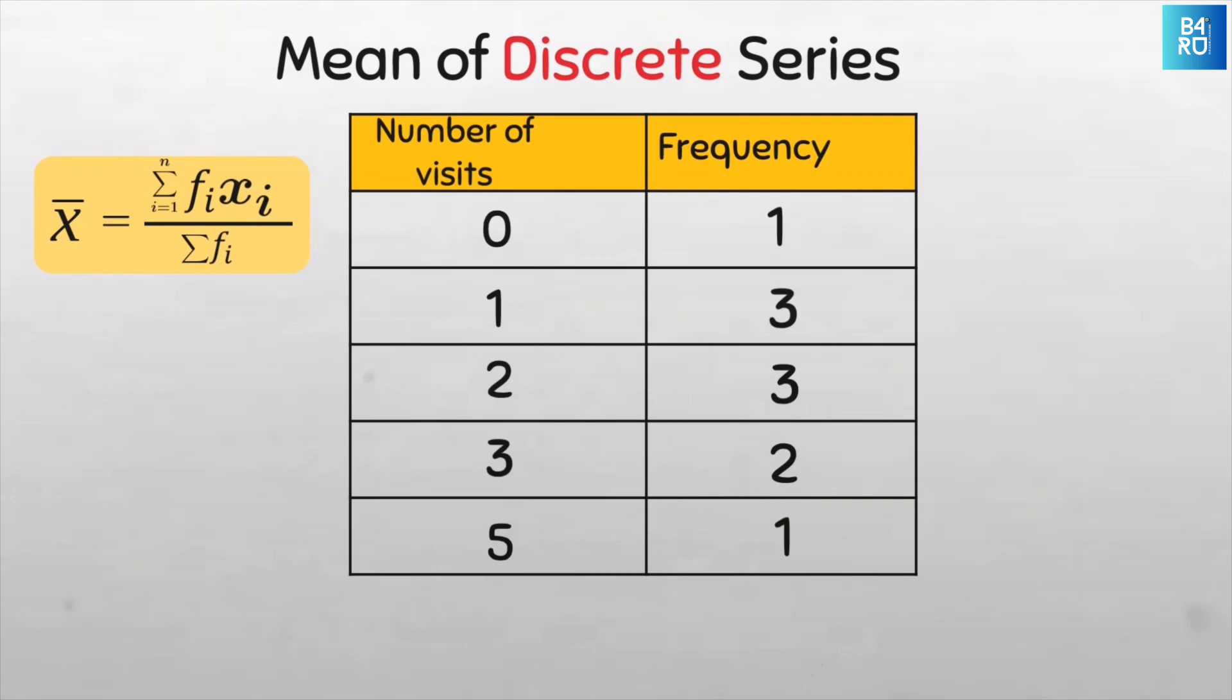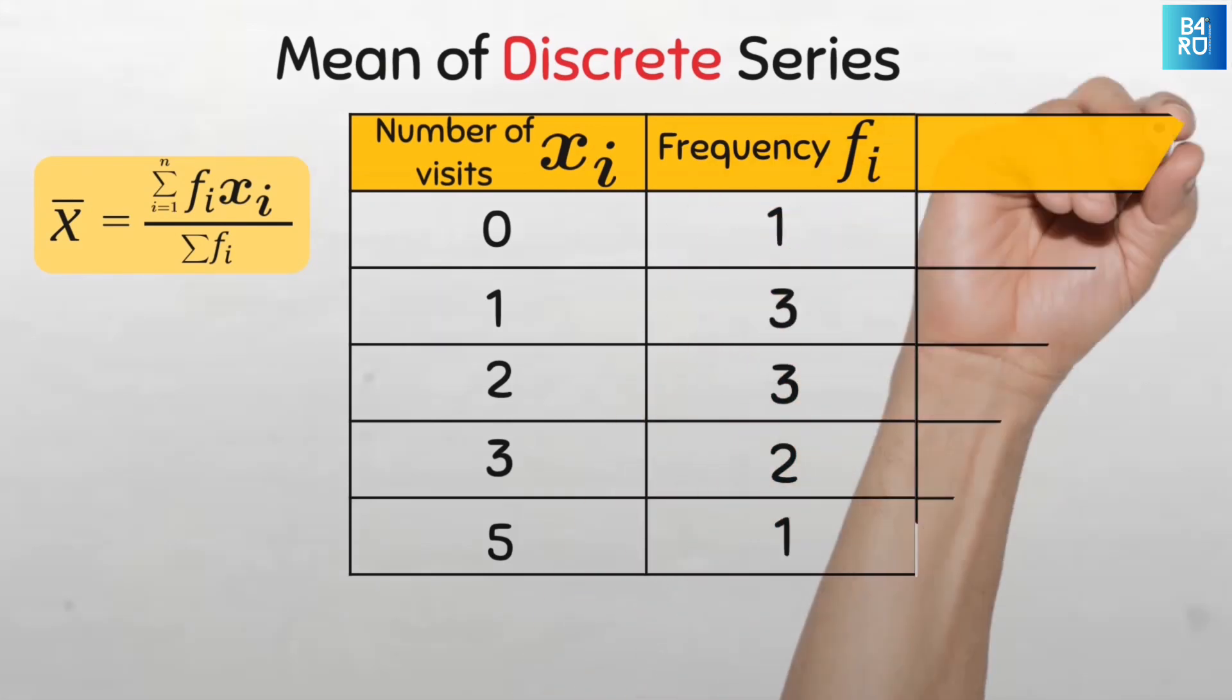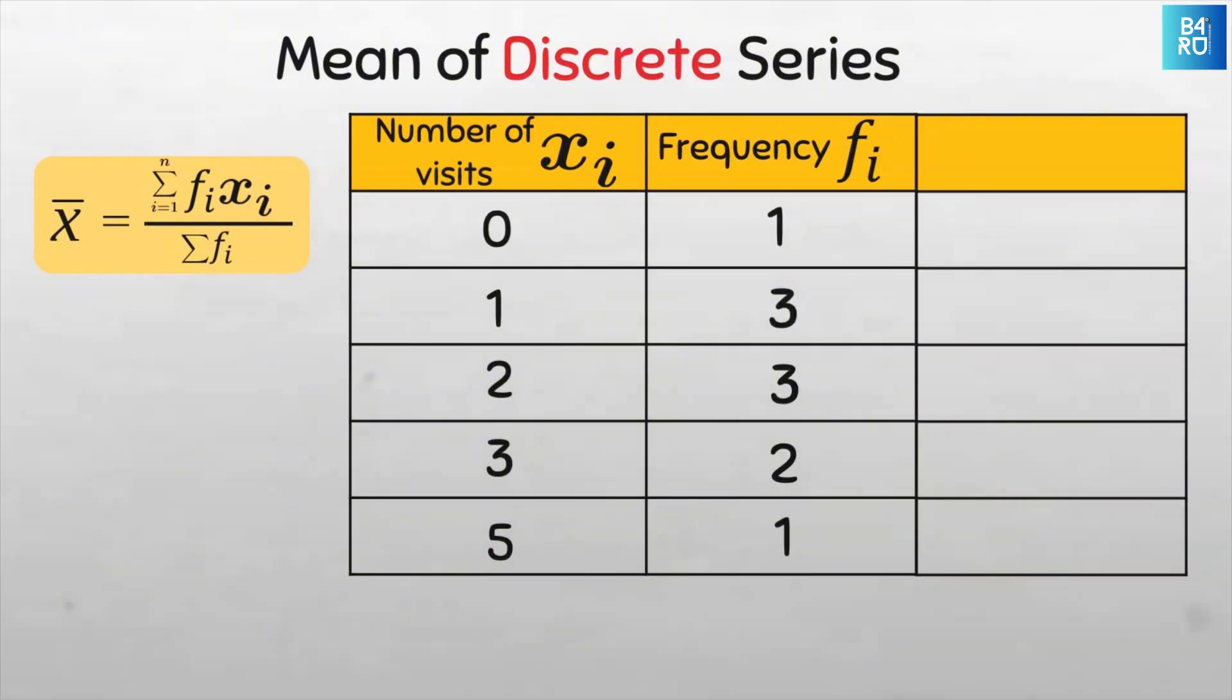First, let's label our table with the correct statistical notation to enable us to easily apply the formula. So our number of visits is our data value, and let's label this as x sub i. The numerator of the formula wants us to find the product of f sub i and x sub i. Let us create a new column now to do the product of the frequency and the values of x. Let's call it f sub i x sub i.